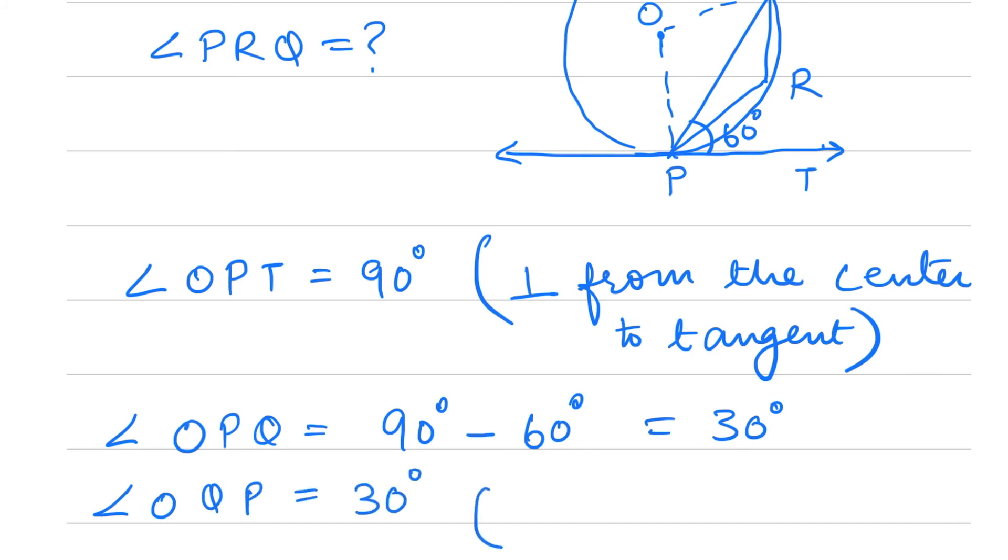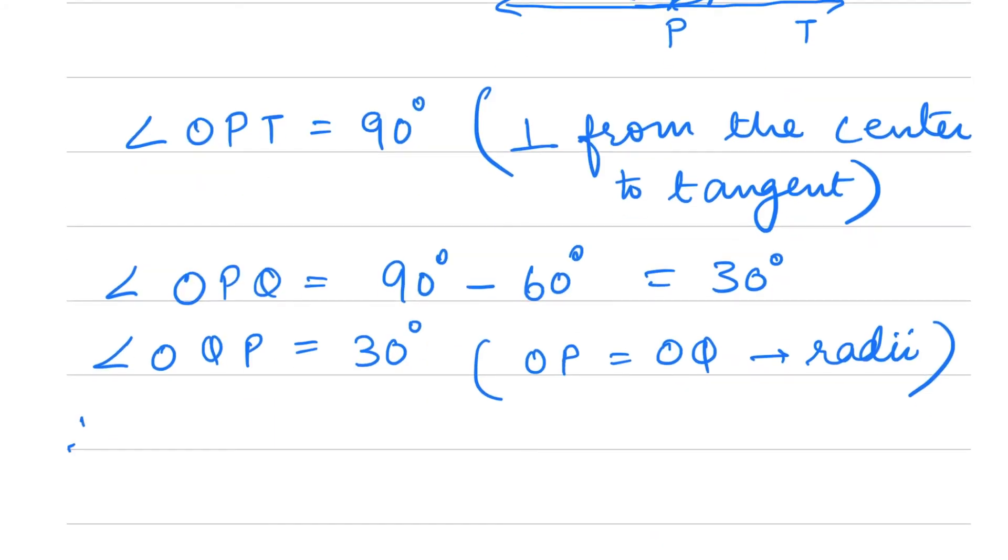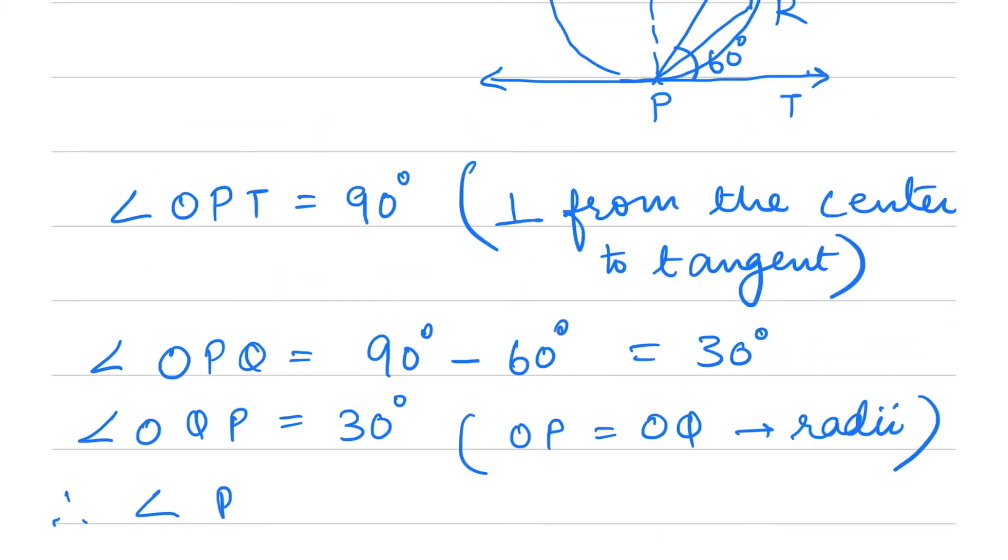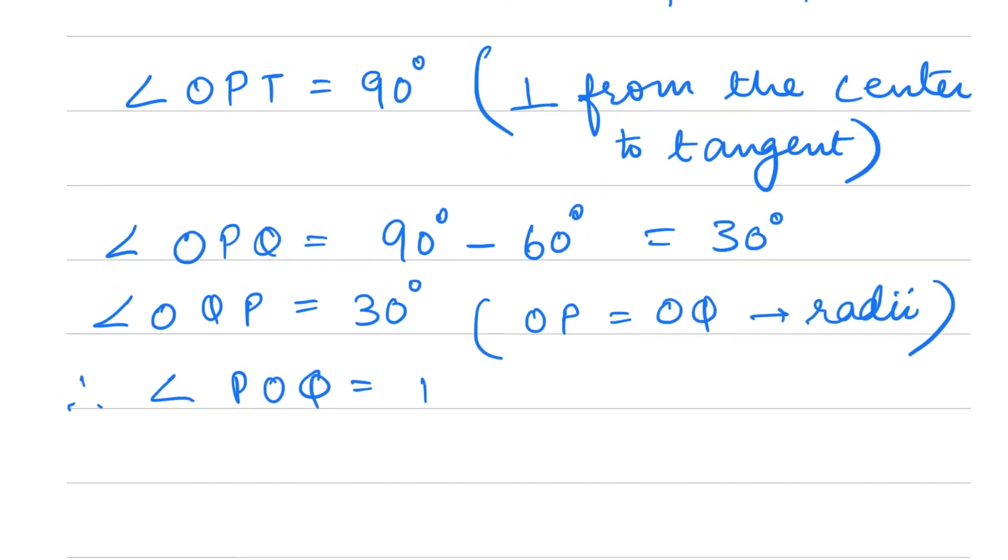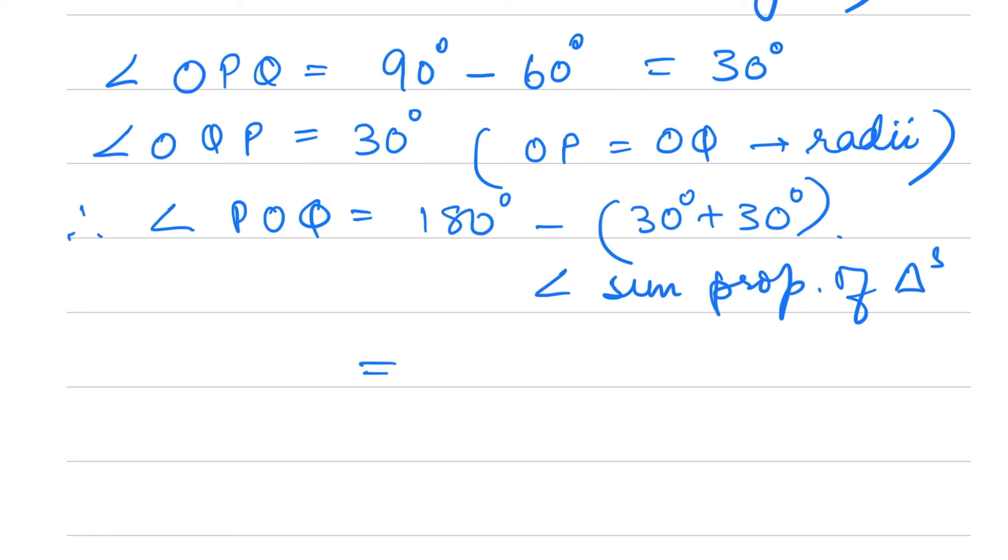Therefore angle POQ = 180° - (30° + 30°) = 180° - 60° = 120°, using the angle sum property of triangles.